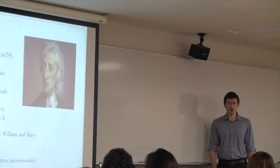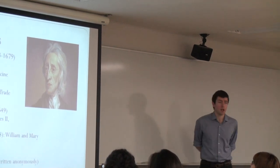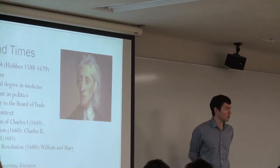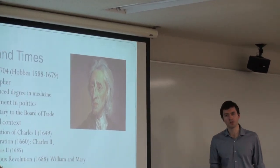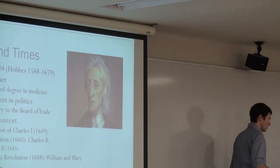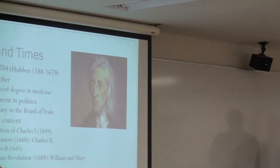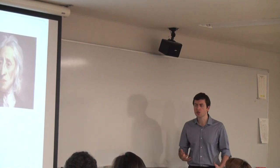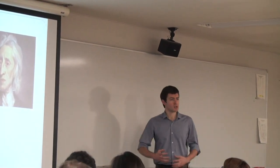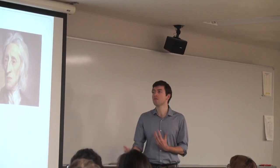John Locke's dates are 1632 to 1704, and so you can see that he overlaps with Hobbes. Well, considerably the younger man, but because Hobbes lived to such an old age and was writing about politics late into his life.